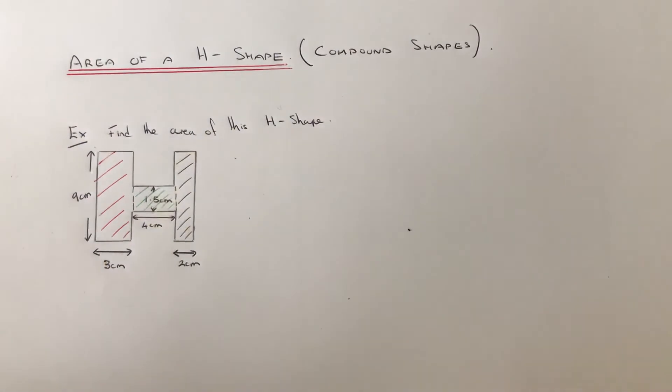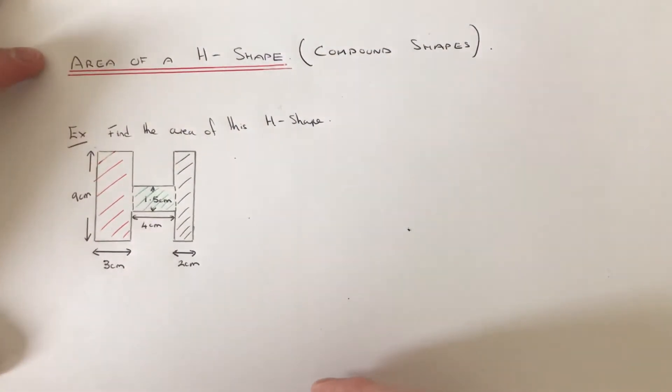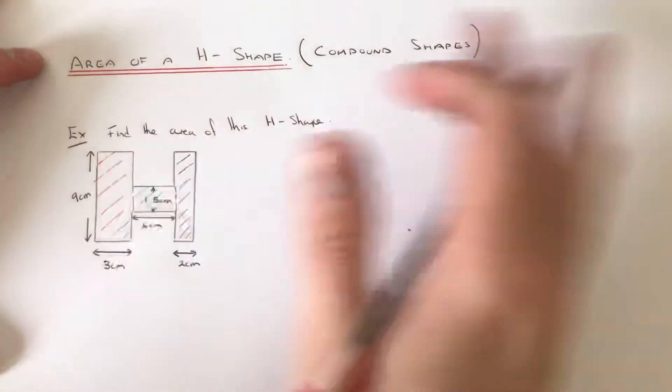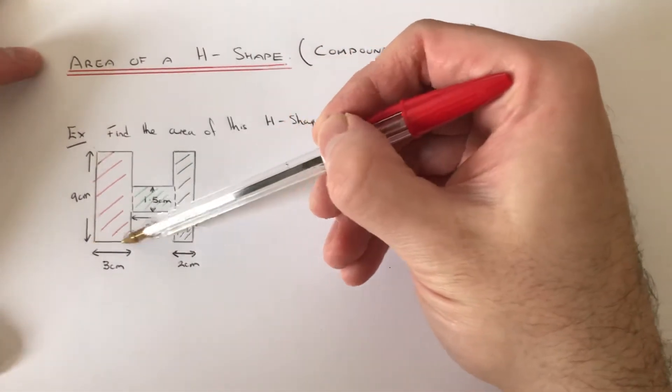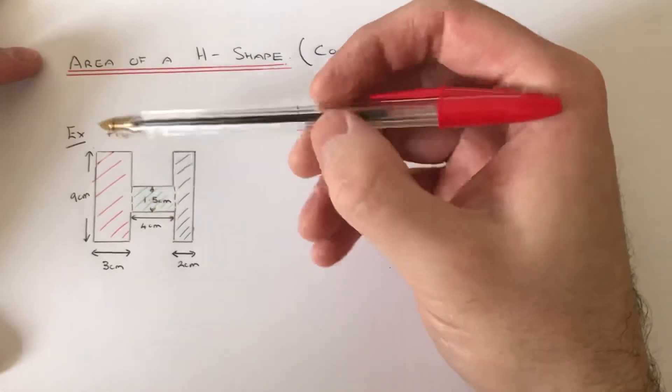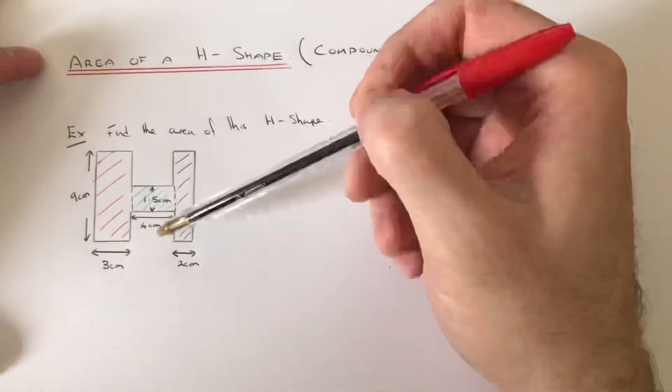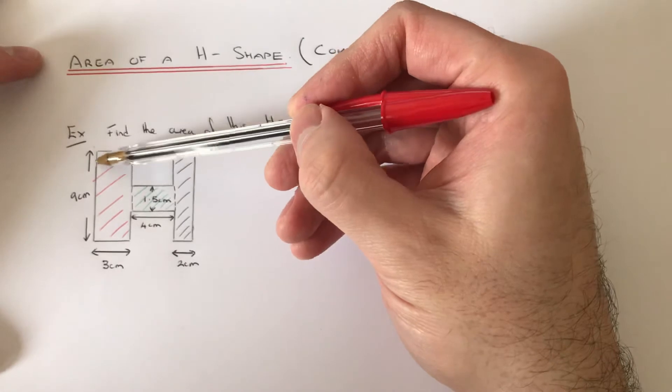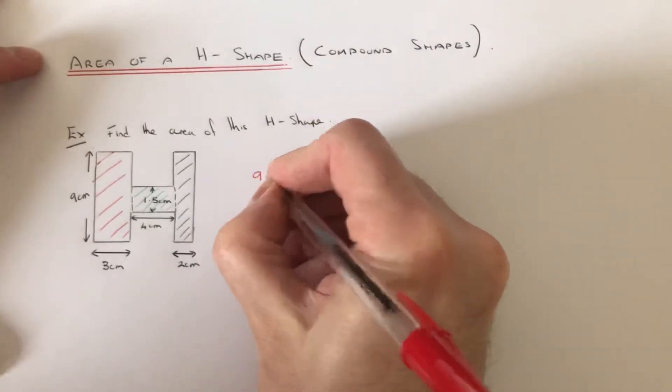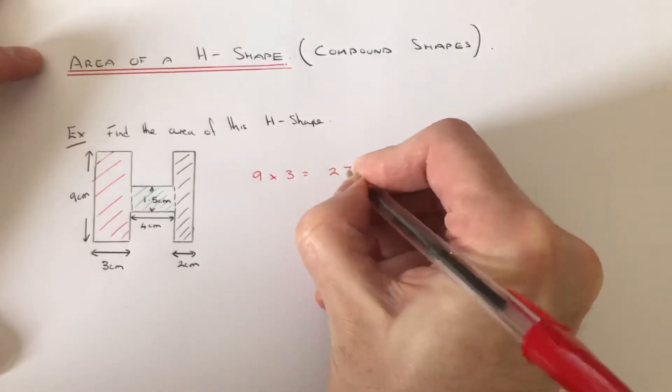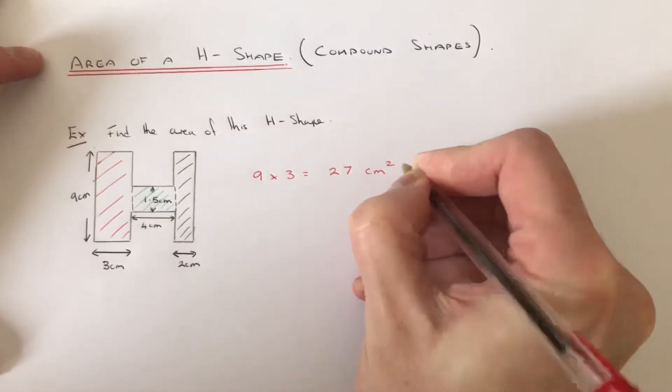Let's start with the red rectangle first. So to find the area of a rectangle, you just multiply the length by the width of the rectangle. Make sure you use the correct measurements. For the red rectangle, it's 9 by 3, so the area will be 27 centimeters squared.